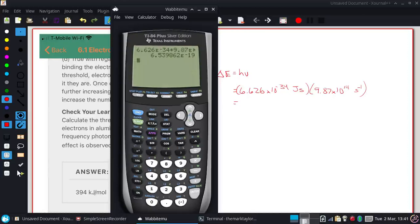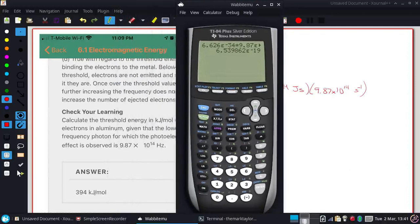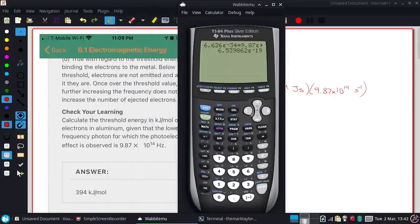Now the answer we get here is per individual atom, and in this case it's aluminum, and so it's just each electron being exchanged. So we need to get a moles worth, so we get that moles part.